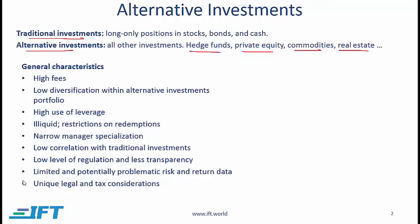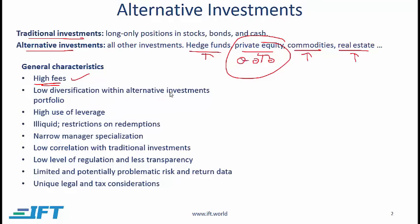Here are some general characteristics of alternative investments. Typically they have high fees, so they are expensive. There is low diversification within alternative investments — so if we just have private equity investments, the diversification across these is going to be low. Often with alternative investments, there is a high use of leverage. Typically these are illiquid and impose restrictions on redemptions. Managers tend to have a very focused specialization. Generally there is a low correlation with traditional investments, which is a huge plus.